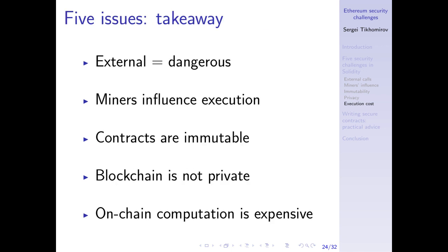Here is a takeaway about the five issues discussed. External is dangerous — beware of external contracts. Miners can influence execution: they can censor or reorder transactions and provide inaccurate environmental data. Contracts are immutable — you cannot patch a contract if you find a bug after deployment, so you must test fully before deployment. Blockchain is not private — don't put any private data in it. And on-chain computation is very, very expensive.